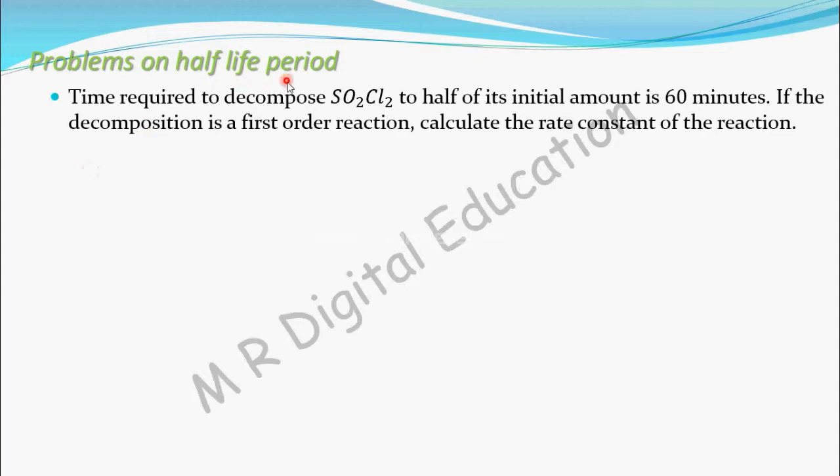Given this decomposition of SO2Cl2 as a first-order reaction and the given time required to reduce to half of its initial amount as 60 minutes. So, the given T half, and we need to find the value of rate constant. That is K equals what? It is an easy problem.